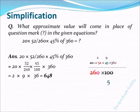Dear friends, today's question is regarding simplification. The question is: what approximate value will come in place of the question mark in the given equation? 20 × 52/260 × 45% of 360 = ?